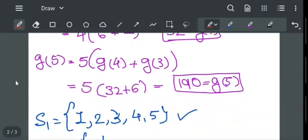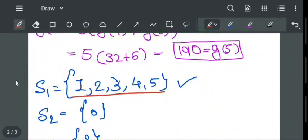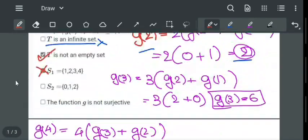s1 is 1, 2, 3, 4, no. s1 is 1, 2, 3, 4, 5, therefore this option is wrong. s2 is 0, 1, 2, s2 is singleton set 0, so this option is also wrong.